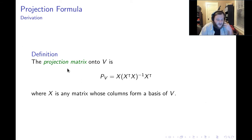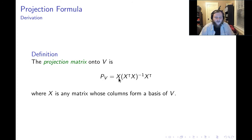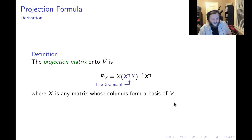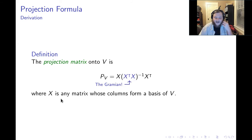The projection matrix onto a vector space V, which I notate as big P sub big V, is equal to X times X transpose X inverse times X transpose, where X is any matrix whose columns form a basis of the vector space V. I want to point out that sitting inside this projection formula is the Gramian of the matrix X we're working with.